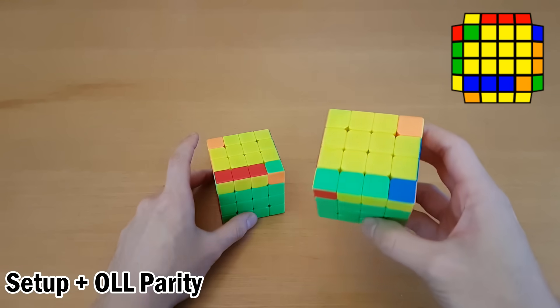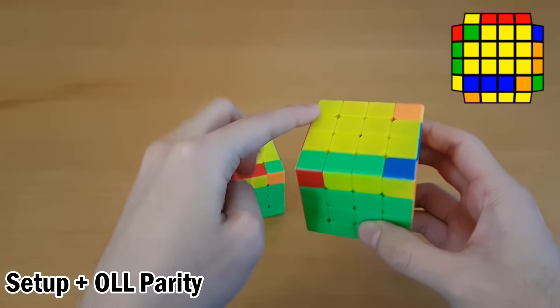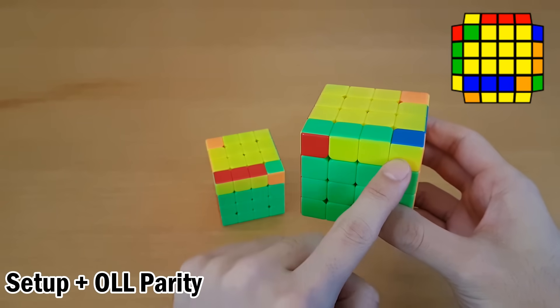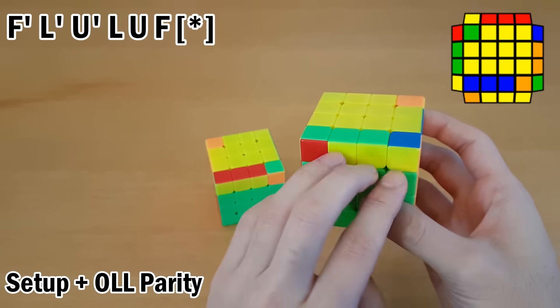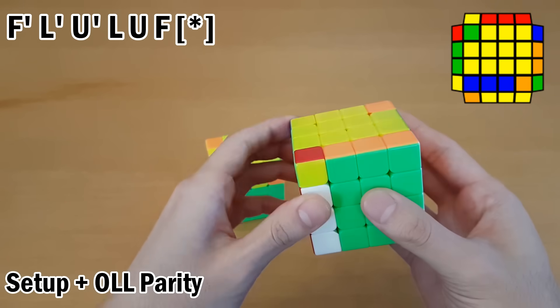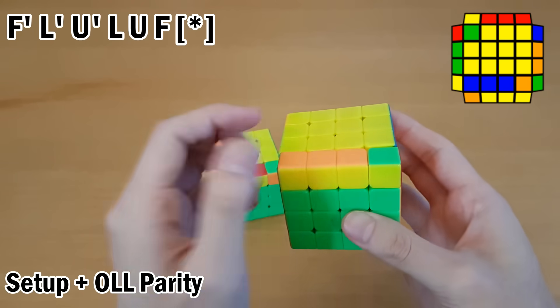For this case and its mirror, how I recognize it is that you have this square at the back, and this block is on the opposite side. So what I do is with the hand that doesn't have this block, I do this. And that gives me OLL Parity.